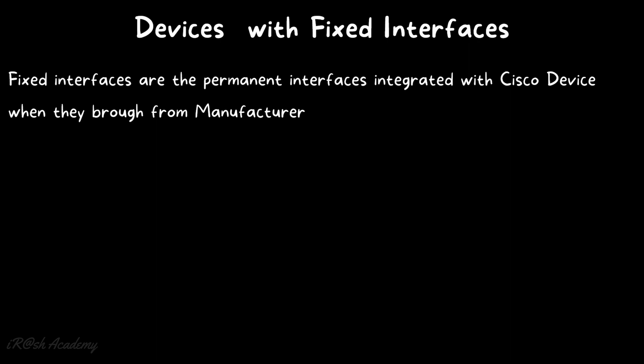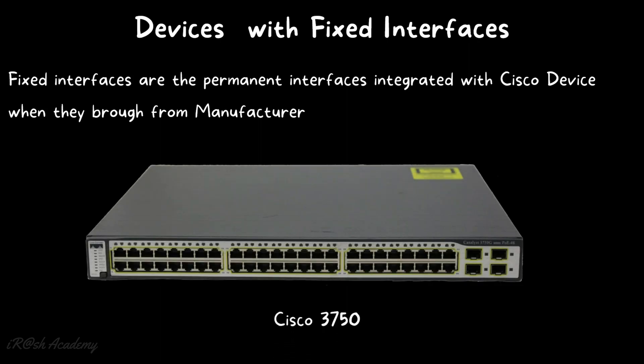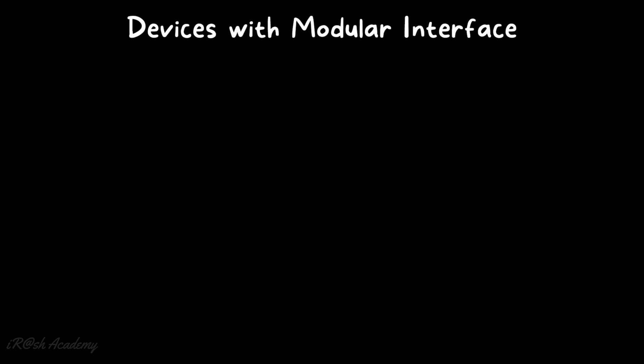Fixed interfaces are the permanent interfaces integrated with Cisco devices when purchased from the manufacturer. As you can see on screen, the Cisco Catalyst 3750 network switch has 48 Ethernet ports. These ports are fabricated by the manufacturer when they sell the device — end users are not allowed to make any changes. These ports are fixed and cannot be changed later. This kind of device is called a fixed interface device.